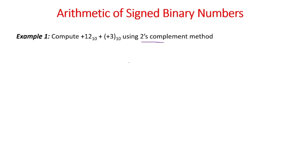We have already discussed in the previous video how to do the arithmetic operation using one's complement form and two's complement form for unsigned binary numbers, but here we have signed binary numbers — positive numbers as well as negative numbers. So first we see how to write the signed binary number using two's complement form.